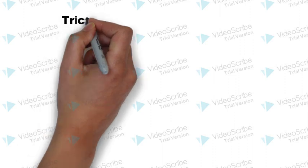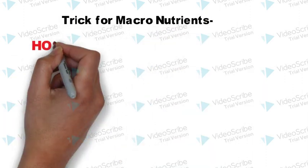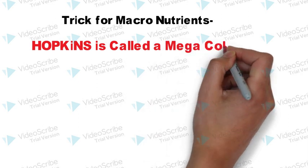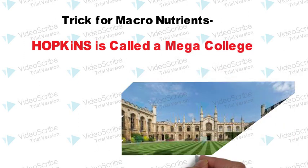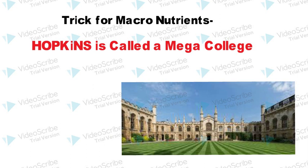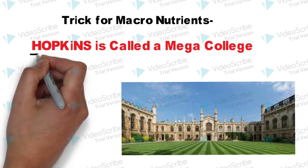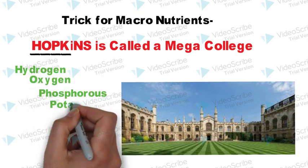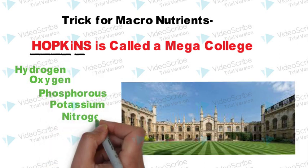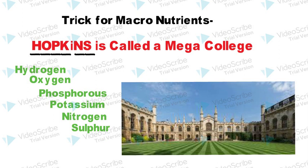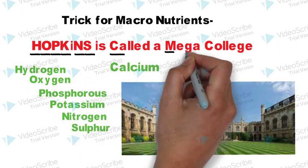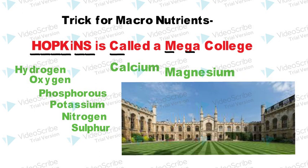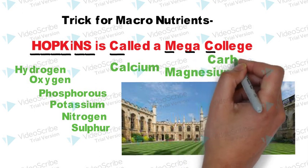The mnemonic for macronutrients is: Hopkins is called a mega college. You know Hopkins University — it's a big college. Just remember: Hopkins is called a mega college, where H represents hydrogen, O represents oxygen, P represents phosphorus, K represents potassium, N represents nitrogen, S represents sulfur, C of 'called' represents calcium, 'mega' represents magnesium, and C represents carbon.